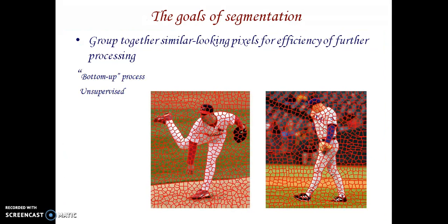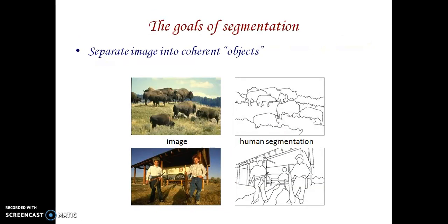Here are some goals of segmentation. We are going to group similar pictures — for example, grouping grasslands that contain similar regions. If we get a shirt and pants of the same color, they are similar objects and we group similar-looking pictures together. This is a bottom-up process — we do the processing in a bottom-up manner, which is called bottom-up processing. These are all the goals of segmentation.